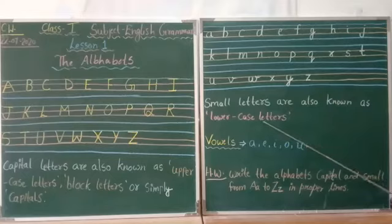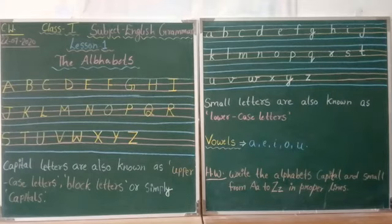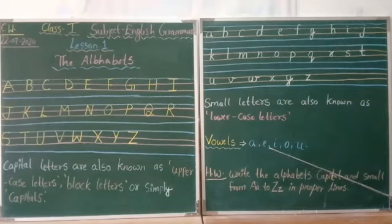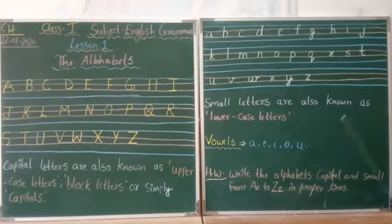Now, students, you have to practice at home how to write small letters and capital letters in proper line. And now I would like to teach you vowels. How many vowels are there? I know you know how many vowels are there. There are 5 vowels. Understood? There are 5 vowels. A, E, I, O, U. And how many consonants are there? There are 21 consonants.